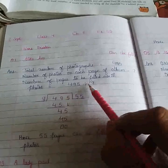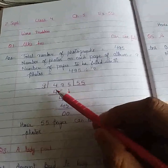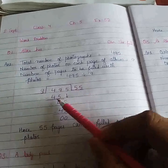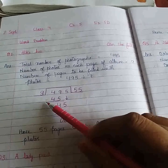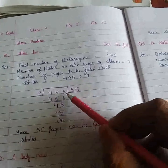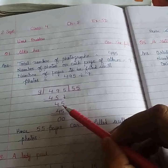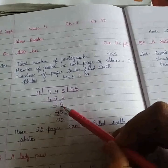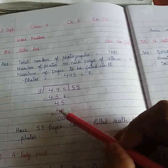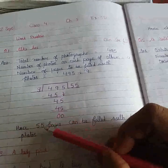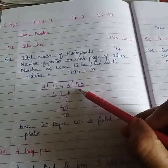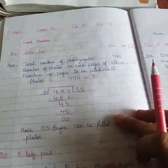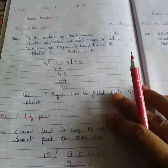So 495 divided by 9. When we divide 49 by 9, 9 times 5 is 45. Now subtract it out: 9 minus 5 is 4. Take this 5 down. Now again it is 45. 9 times 5 is 45. Subtract both: 5 minus 5 is 0 and 4 minus 4 is 0. So it is 55. Hence, 55 pages can be filled with 495 photographs. This is question number 1, and it is finished here.